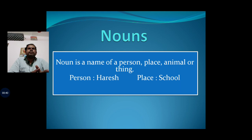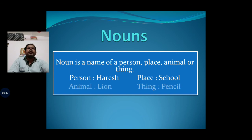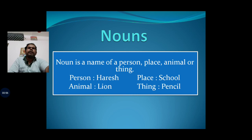In a person's example, I have written Harish. In place example, I have written school. Then in animal's example, lion. And in things example, I have written pencil. So you can take out of this any noun, any name.